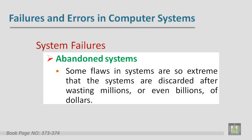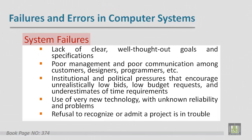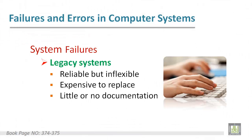For abandoned systems, some flaws are so extreme that systems are discarded after wasting millions or even billions of dollars. The general causes of system failures include: lack of clear, well-thought-out goals and specifications; poor management and communication; institutional and political pressures that encourage unrealistically low bids and underestimates of time; use of very new technology with unknown reliability; and refusal to recognize that a project is in trouble.